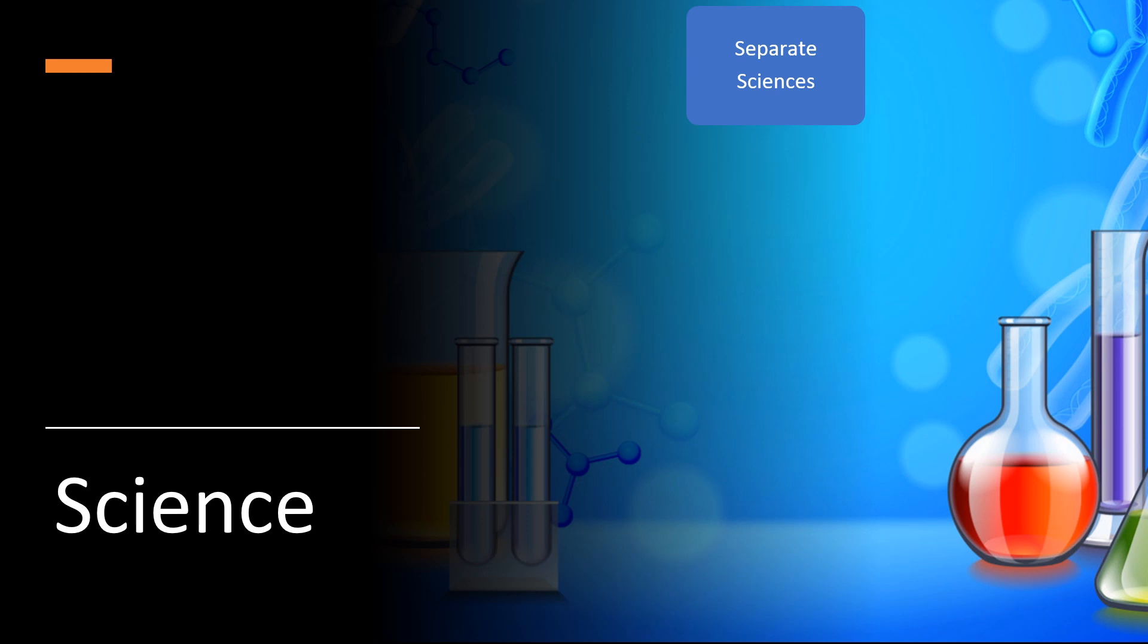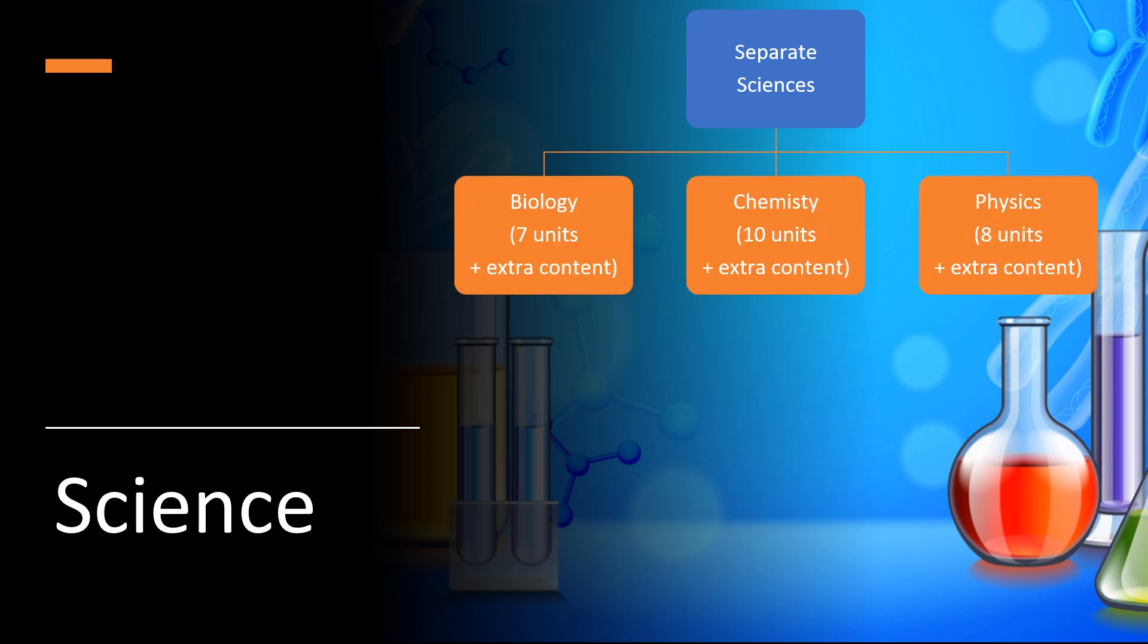If your child is being given the option of opting for Separate Sciences, it follows a similar pathway, but with a few little differences. First of all, there is extra content and that is the reason for it being an option subject. It will require extra time to cover that additional content. So there is more content in all of the units as an extra unit in physics, but then there's additional content throughout all of the other units in biology, chemistry and physics as well.